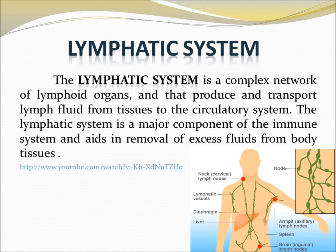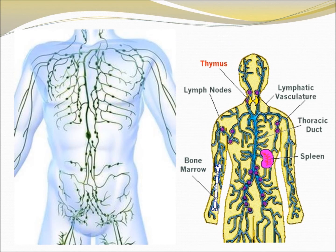The lymphatic system is a complex network of lymph-related organs that produce and transport lymph fluids from tissues to the circulatory system. It acts as part of the immune system. Here the parts are given as lymph nodes, lymphatic vasculature, thoracic duct, spleen, and bone marrow.